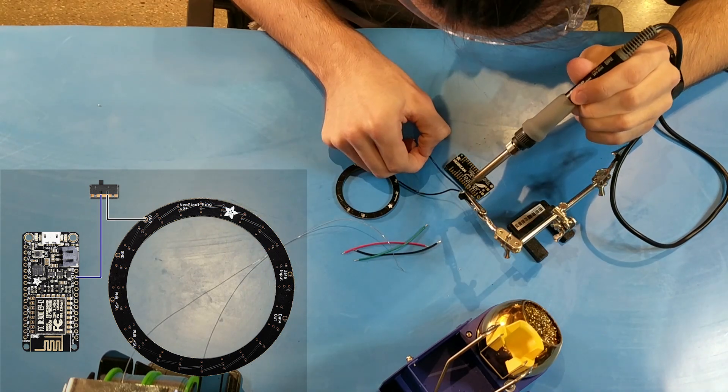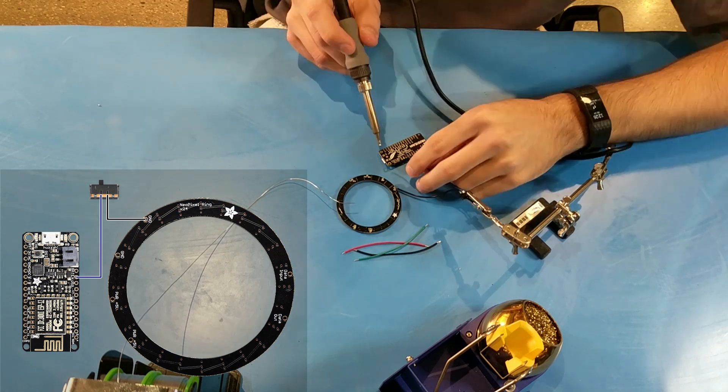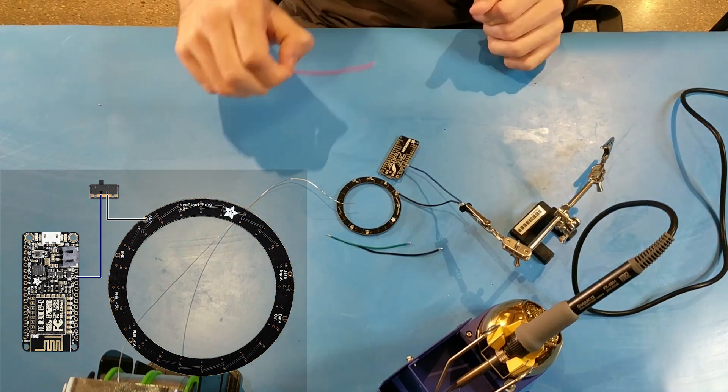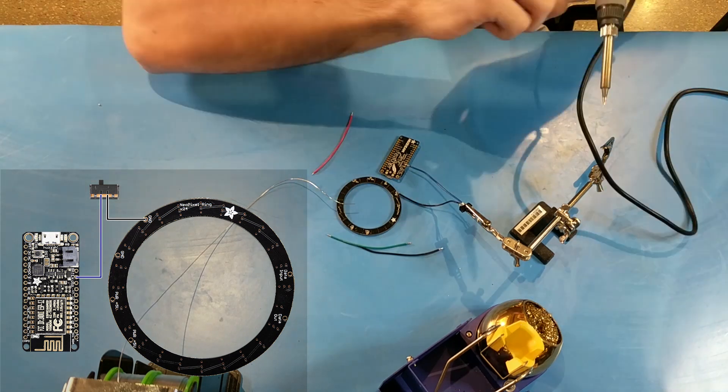For the enable, I am going to use blue. Now that we have the switch all wired up, we are going to wire power to the Neopixel ring.